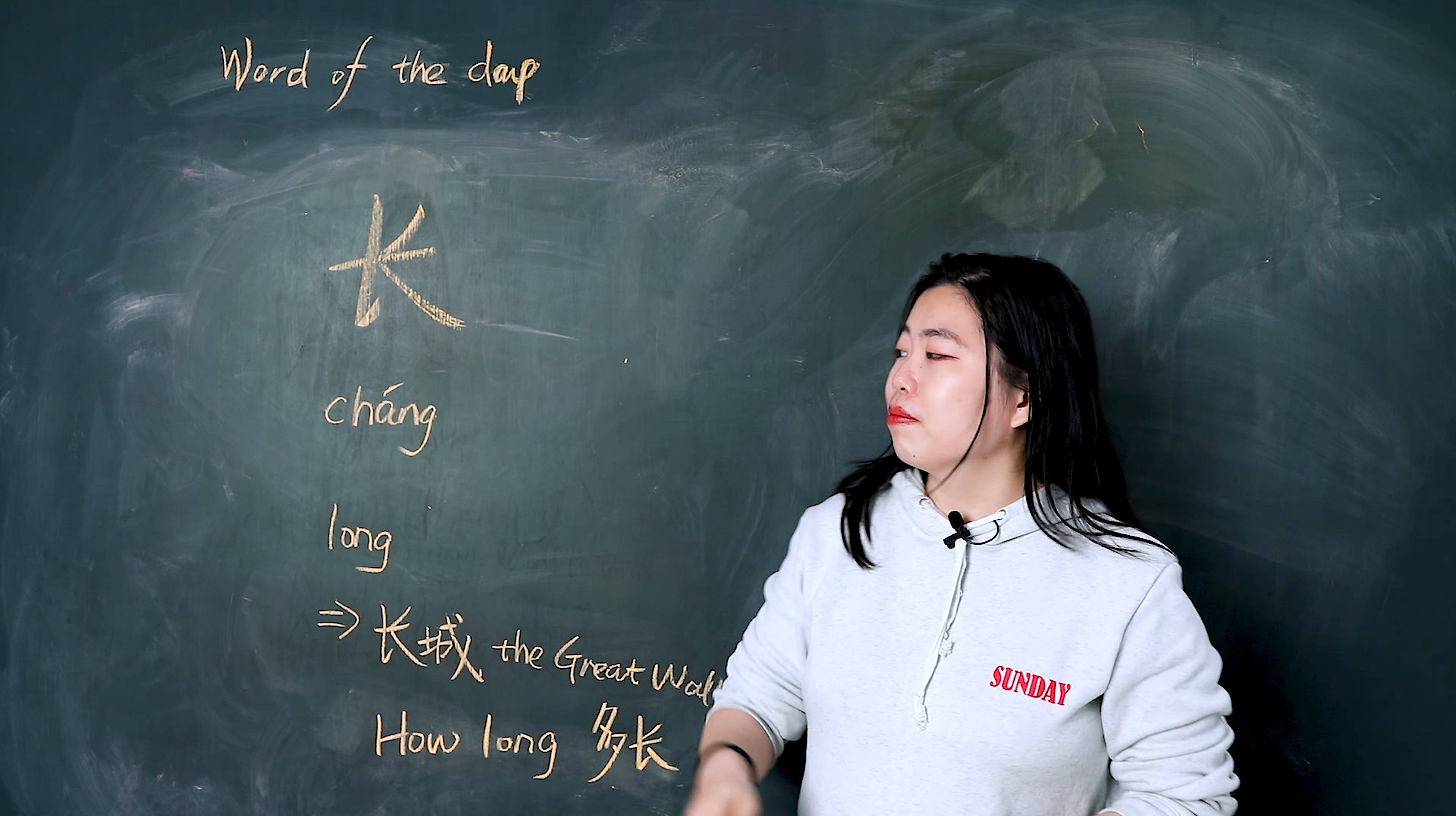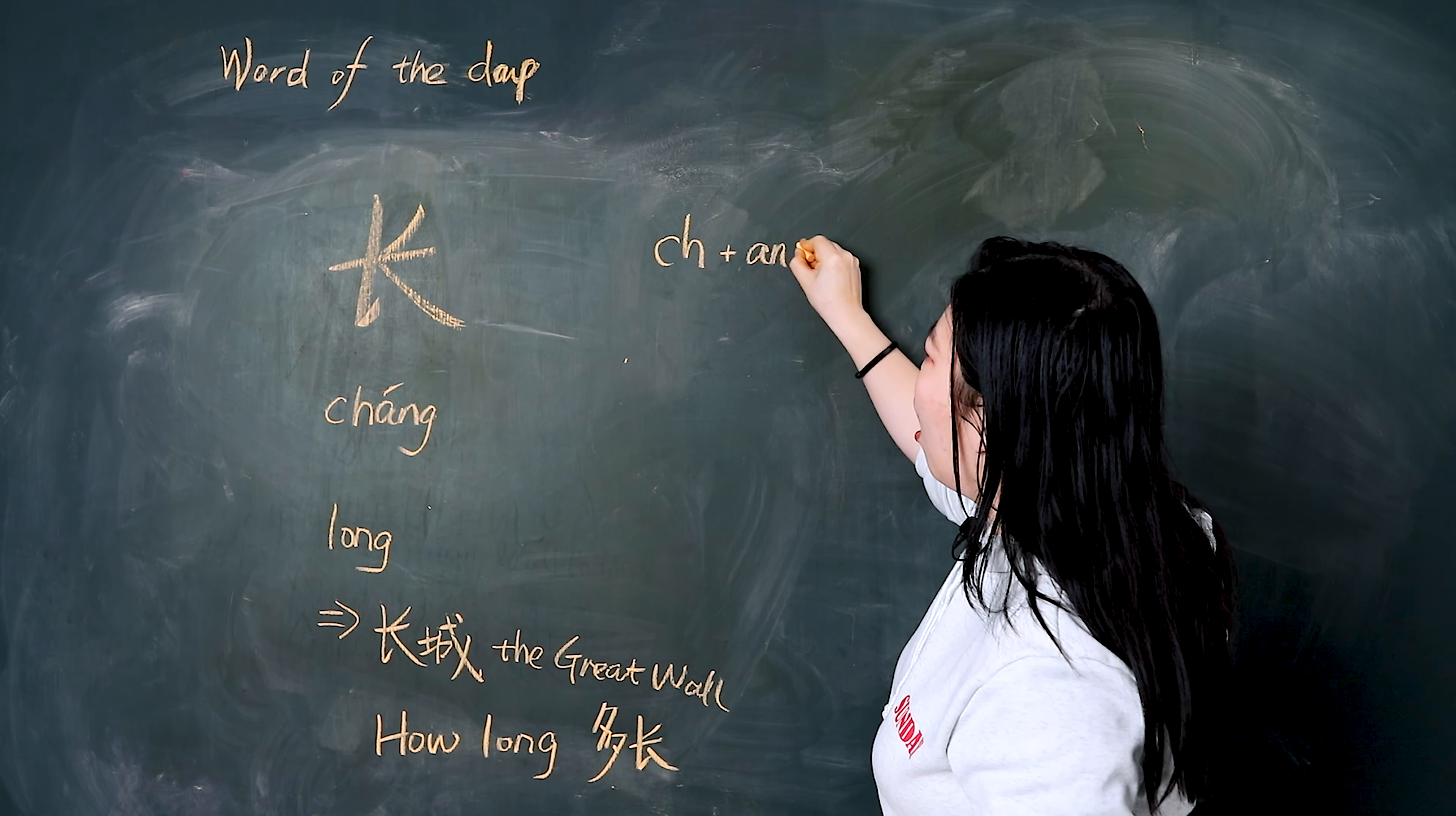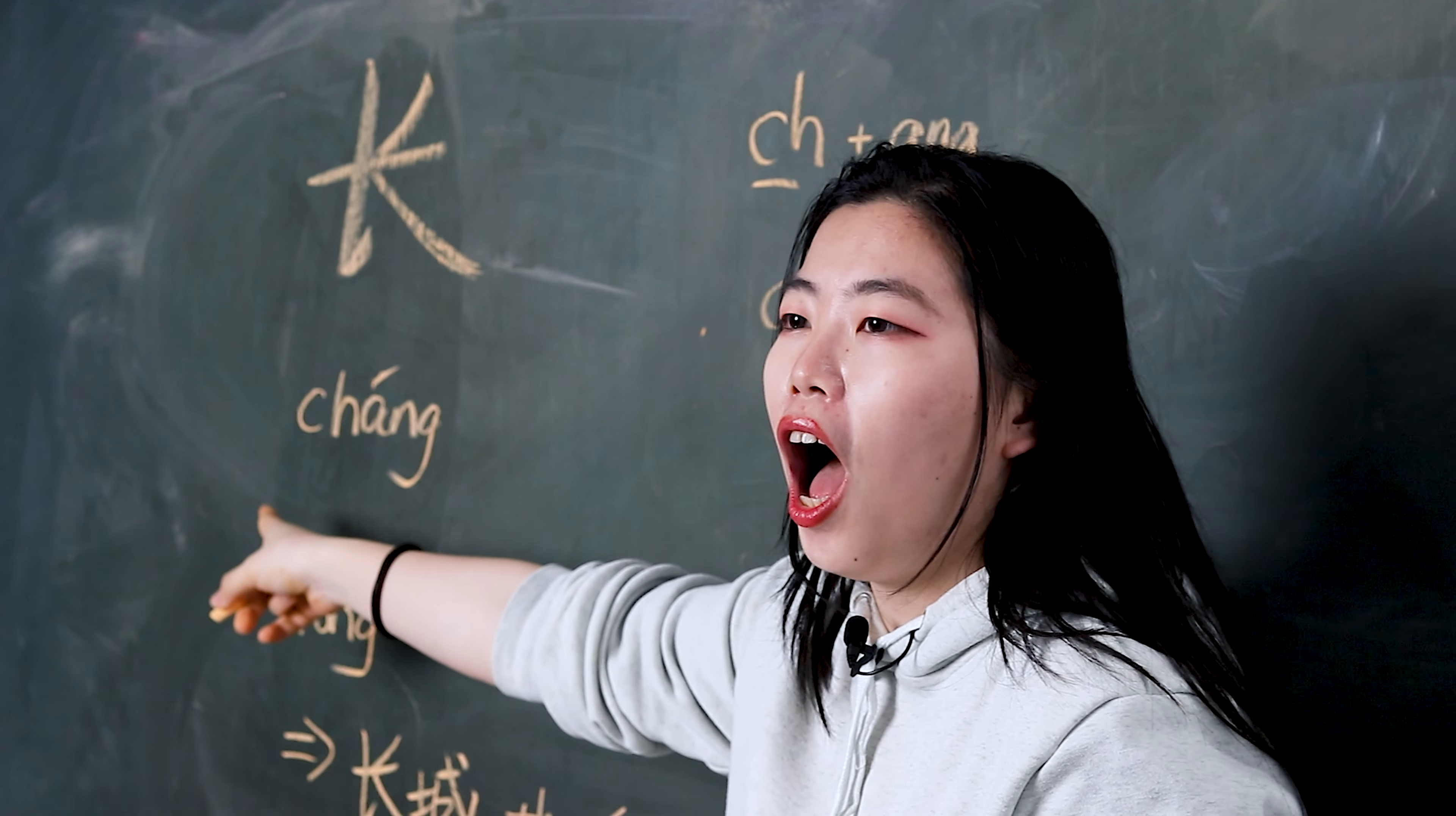First, let's read together. 长. 吃吃吃. 昂. Open your mouth and go back. 昂. Good. 吃昂 together. 长. And second tone. 长. 长. Good.